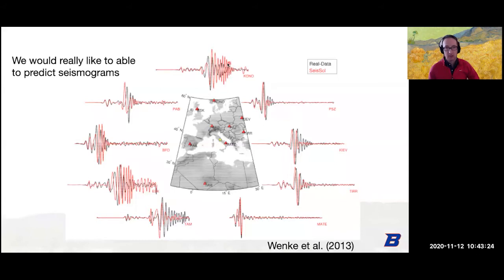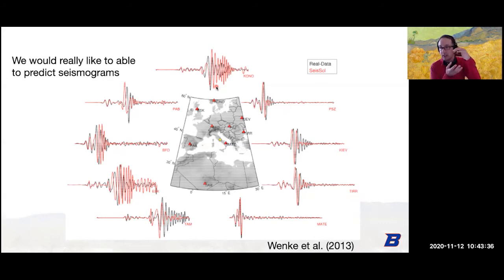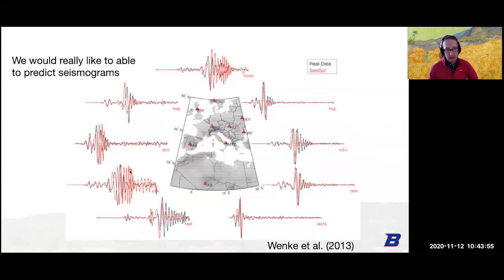Deep basins where the bedrock is deep and filled with sediments — that's actually where most cities are built. LA sits on a big basin, Tokyo sits in a big basin, Seattle sits in a big basin. We have a really hard time currently modeling ground shaking in these basins because we don't have a good 3D structure model of the earth in those areas. The key hazard point is that waves in basins don't die down quickly — the shaking is stronger and it lasts longer.